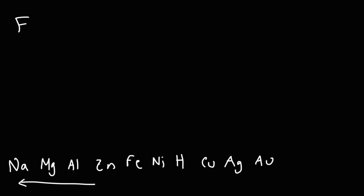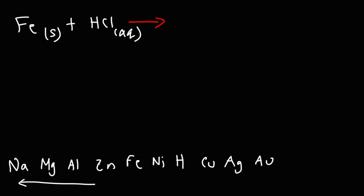In the next example, we're going to mix iron metal — in a solid state — with hydrochloric acid, which is aqueous. Go ahead and predict the products of this single replacement reaction. Note that iron is to the left of hydrogen in the activity series, so this reaction is going to work.